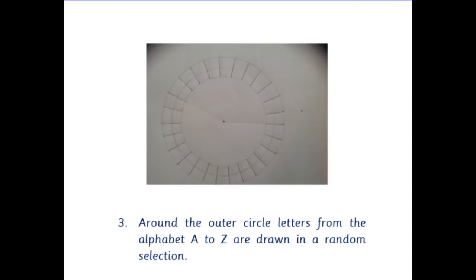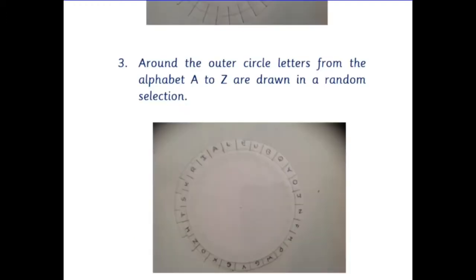Around the outer circle we put letters from the alphabet A to Z. But this has got to be drawn in a random manner, not A, B, C, D but just a random selection. You can see this in the diagram here. The letters are all random from A to Z.